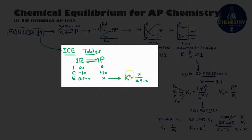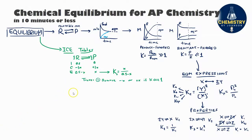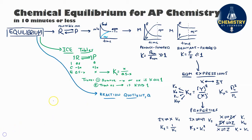In almost all ICE table problems, you'll take the equilibrium row values and plug them into your K expression. If your K value is Kc, use molarities; if it's Kp, use partial pressures. There are also helpful algebraic tricks, like dropping small ±x terms when K is very small. If K is very large, you can assume the reaction essentially goes to completion, ignore the ICE table, and use normal stoichiometric methods treating it as a forward-arrow-only reaction.